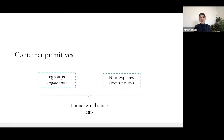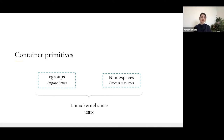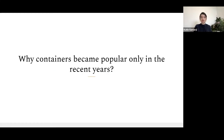To run a container effectively, we require two main primitives: cgroups and namespaces. Cgroups are used to impose limits on what resources a process can use — this refers to CPU and memory. Namespaces on the other side control what a process can see, including other processes, mounts, network interfaces, and so forth. However, these two primitives have been within the Linux kernel since 2008, and a natural question emerges: why did containers become popular only in recent years?